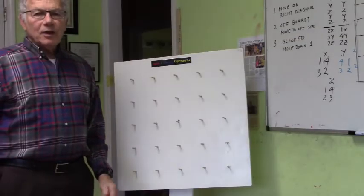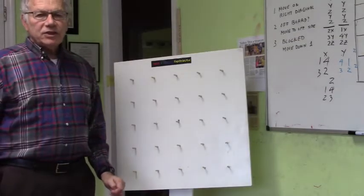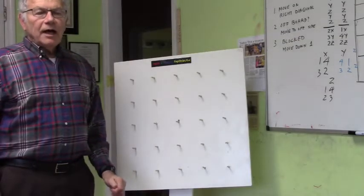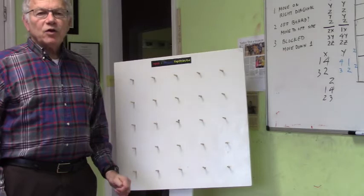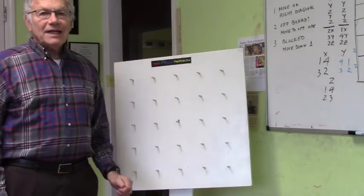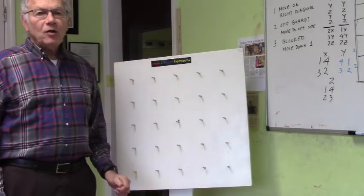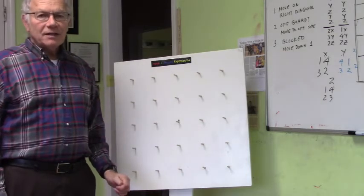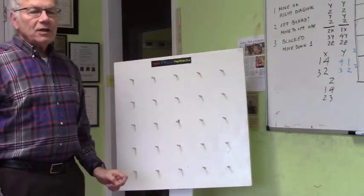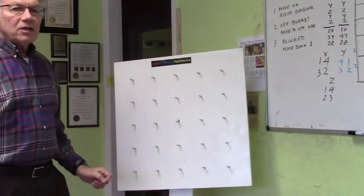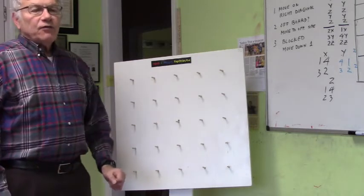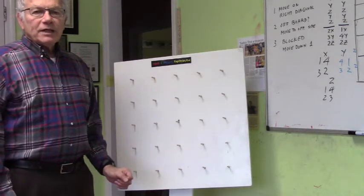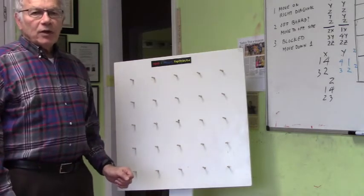I am Dr. Miller, math magician. I am going to teach you the secrets of learning math extremely well and easily. And I'm going to illustrate this by solving a 14 by 14 magic square.